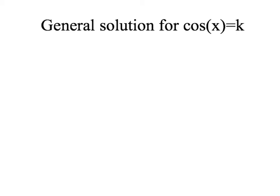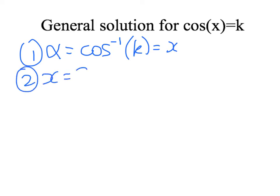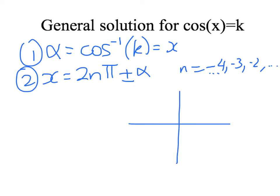So general solution for cos of x equals k. Step 1 is get alpha, the principal value. Step 2 is to say that x is equal to multiples of 2π plus the alpha value and minus the alpha value. So n is equal to whatever we need it to be equal to to get in the right range. Now I want to try and link this in now to the idea of the unit circle and the definition of the functions.